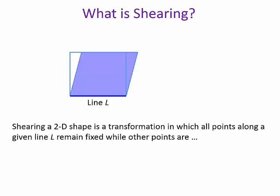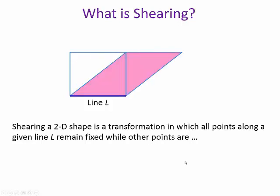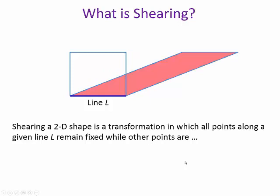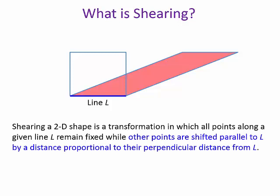How are the other points shifted? You can see how the rectangle becomes a parallelogram. The other points are shifted parallel to L by a distance proportional to the perpendicular distance from L. But what does that mean?